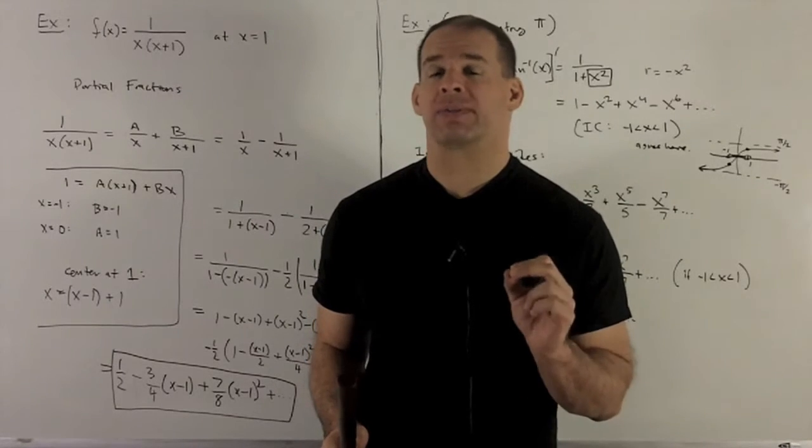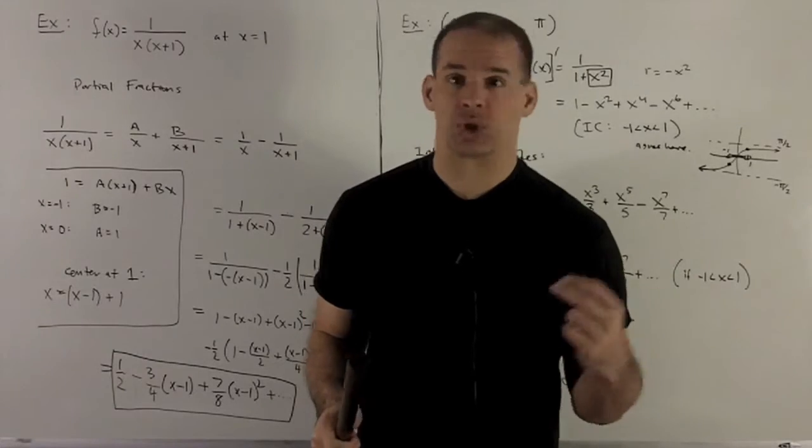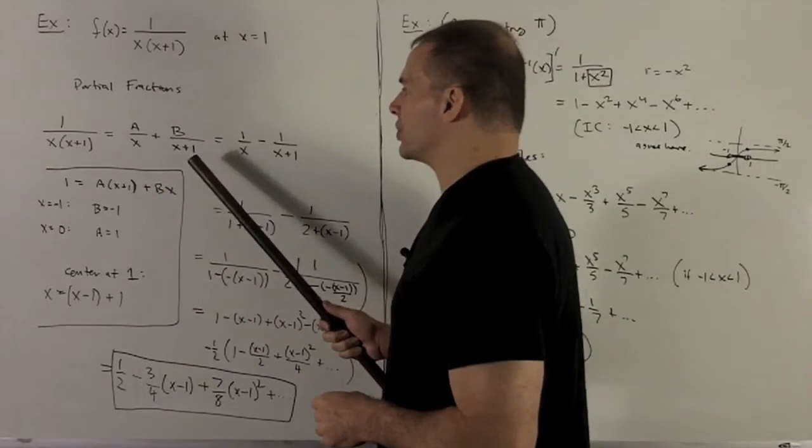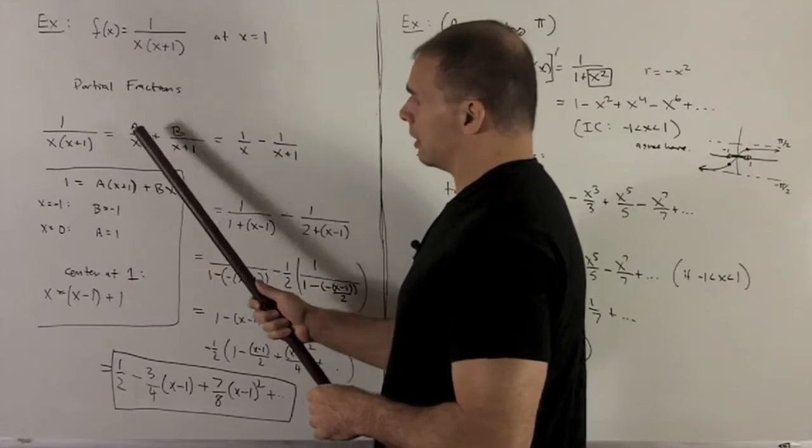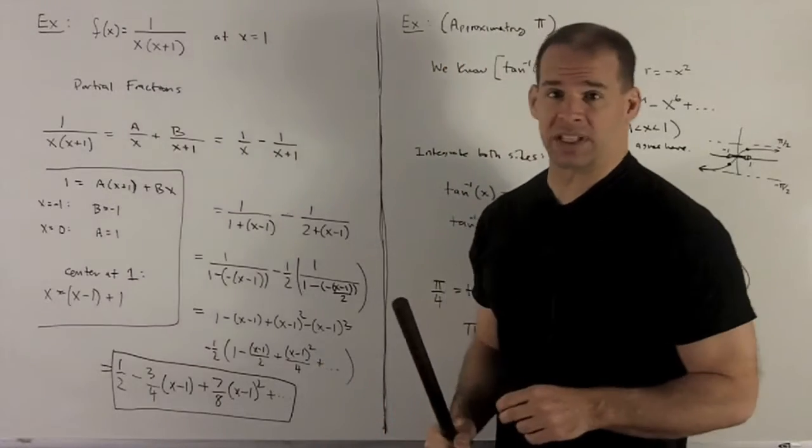We want to use partial fractions to pull that apart to get it into linear terms, and then we can use our last trick. So we set up our partial fractions, take each factor, give it its own component, and then put a constant on top of those to be solved in a second.